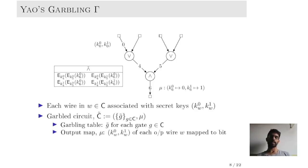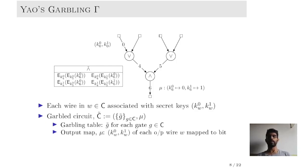For example, consider the AND gate. The garbling table consists of four double ciphertexts of the underlying encryption. The outer and inner keys used in this encryption correspond to the two incoming wires to this AND gate, whereas the payload corresponds to one of the two keys of the outgoing wire. What exactly is the payload is determined by the gate being evaluated. In the case of the AND gate, in the first three cases we encrypt key W0 corresponding to bit zero, whereas only in the last case — when the outer and inner keys correspond to the one bit — do we encrypt key W1.